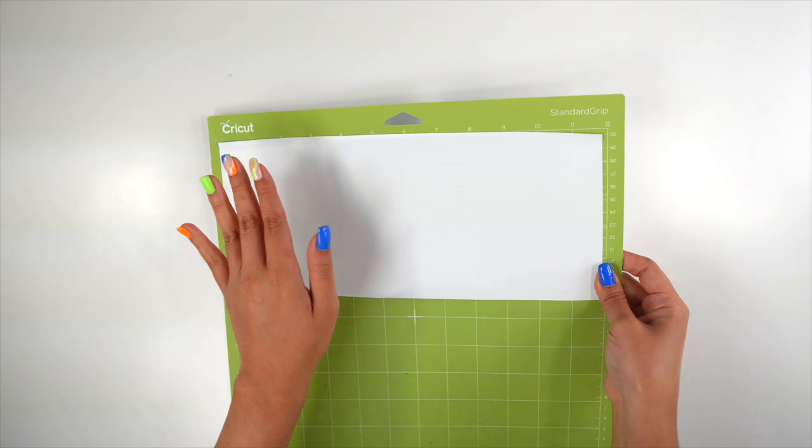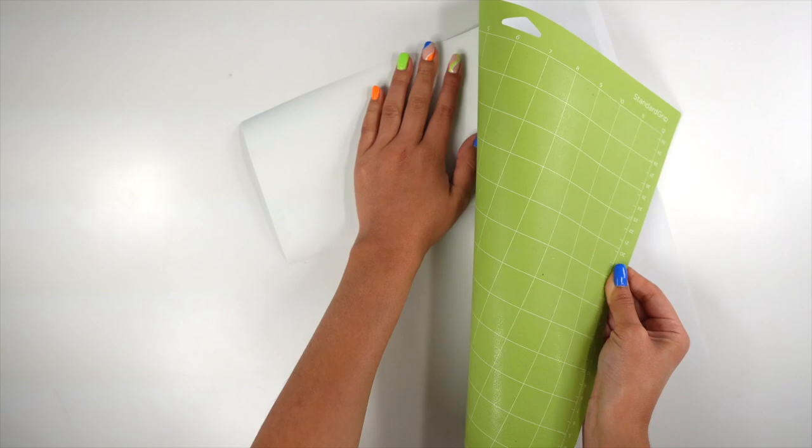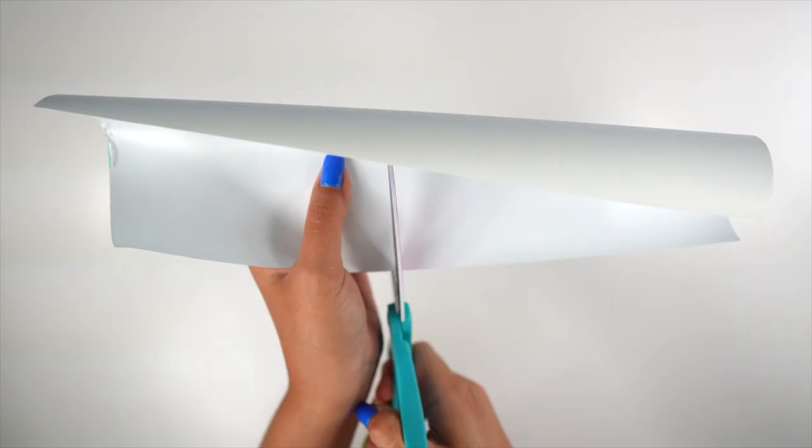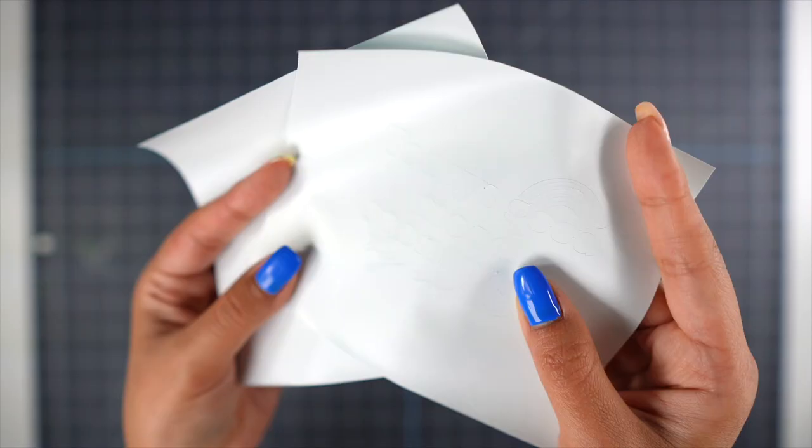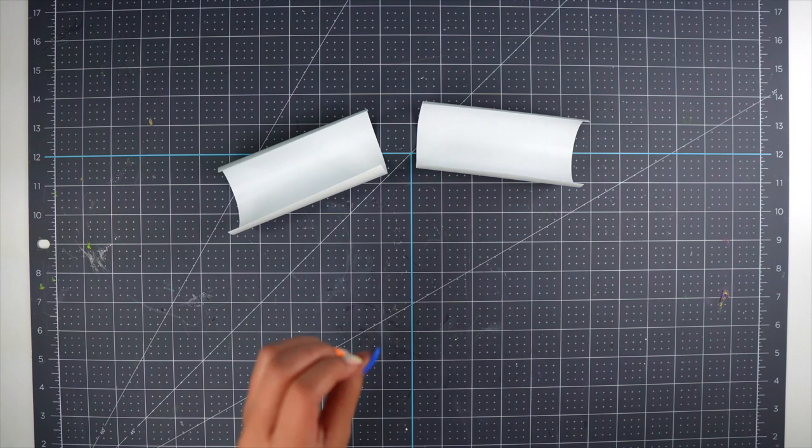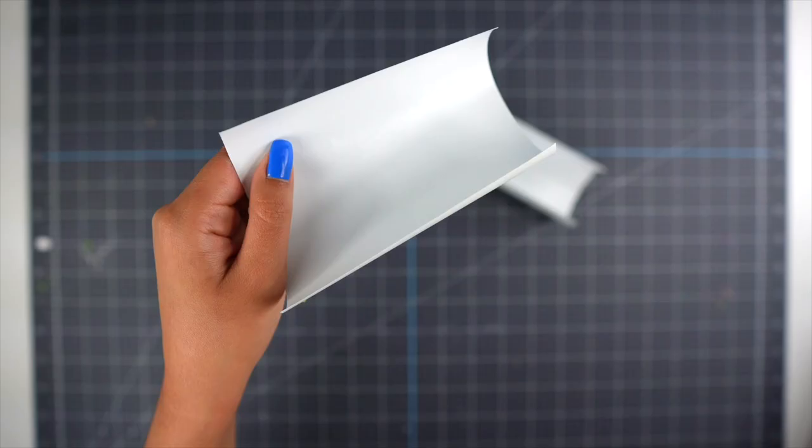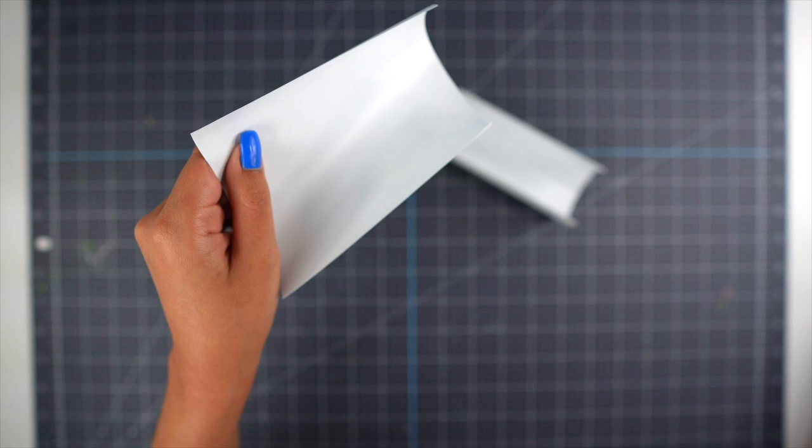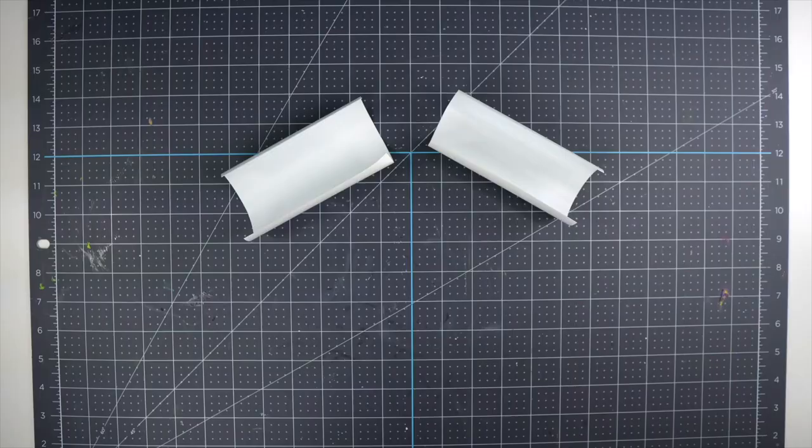Once your machine is done cutting you can flip your mat over and remove the vinyl. For this project the weeding process is a little bit different because we're creating a template. Instead of weeding around your design you're weeding inside your design, so it's going to be the complete opposite.